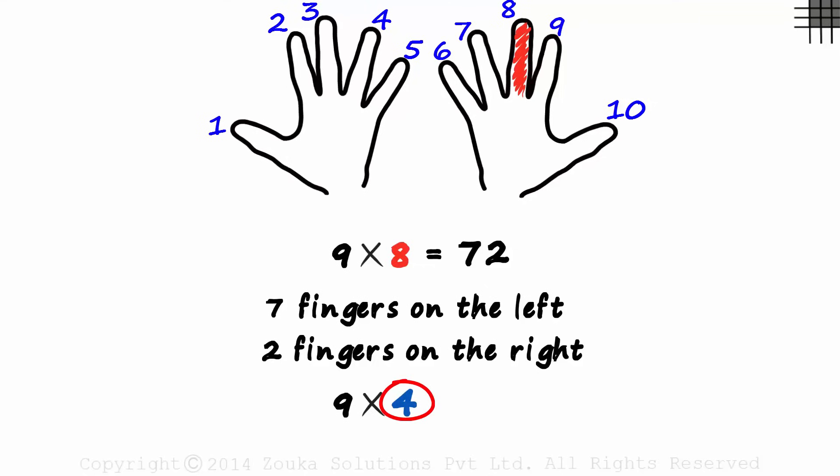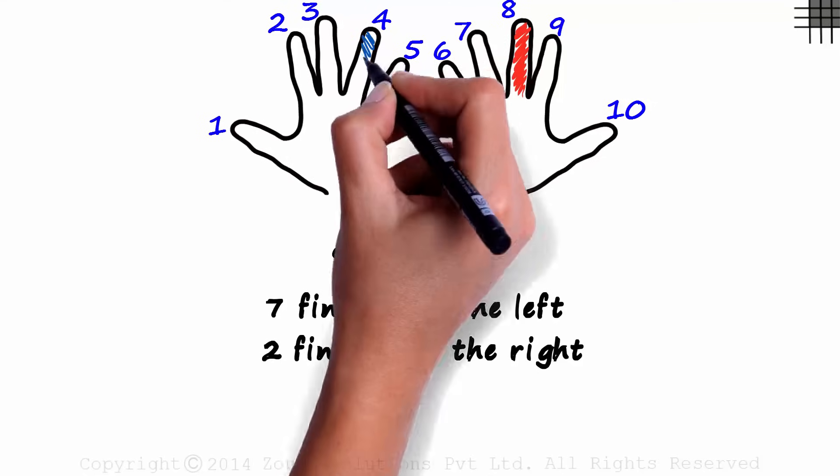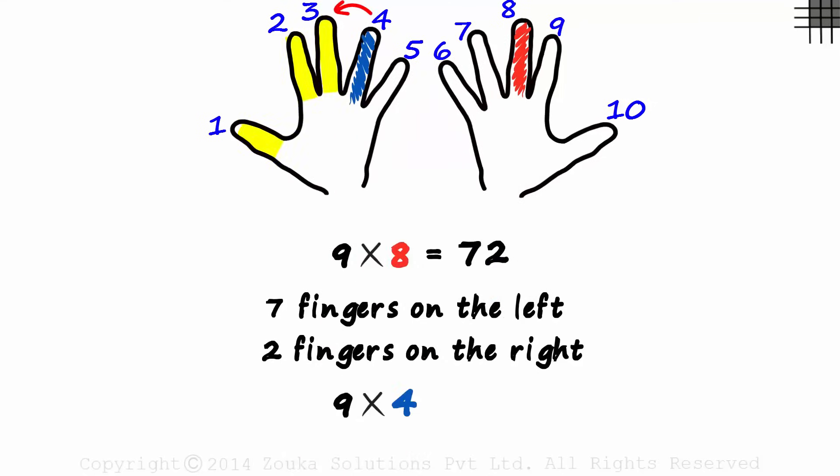Okay, as it's the 4th multiple, we colour the 4th finger. 3 fingers on the left, so we write a 3. And 6 fingers on the right, so we write a 6. 9 times 4 is 36.